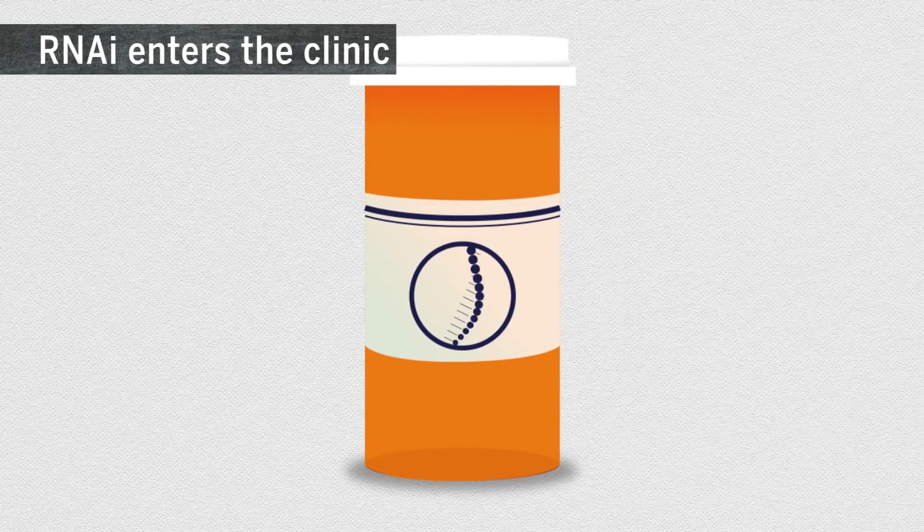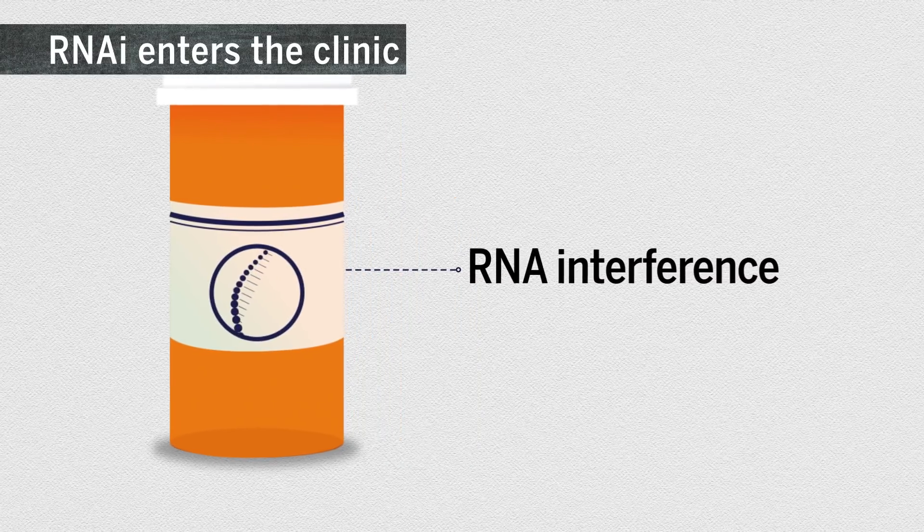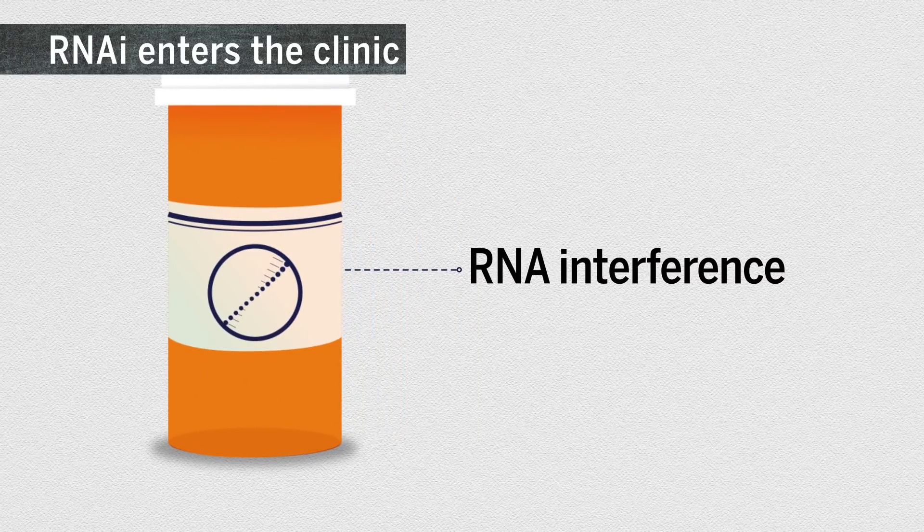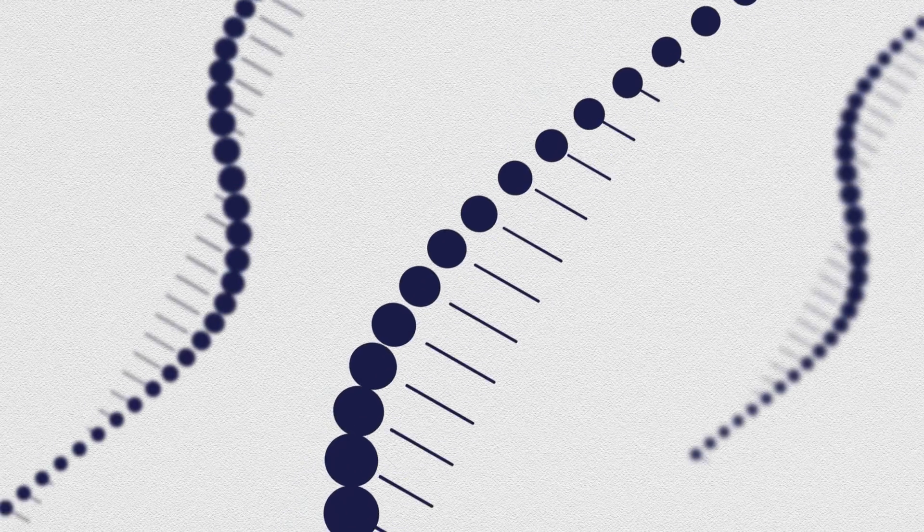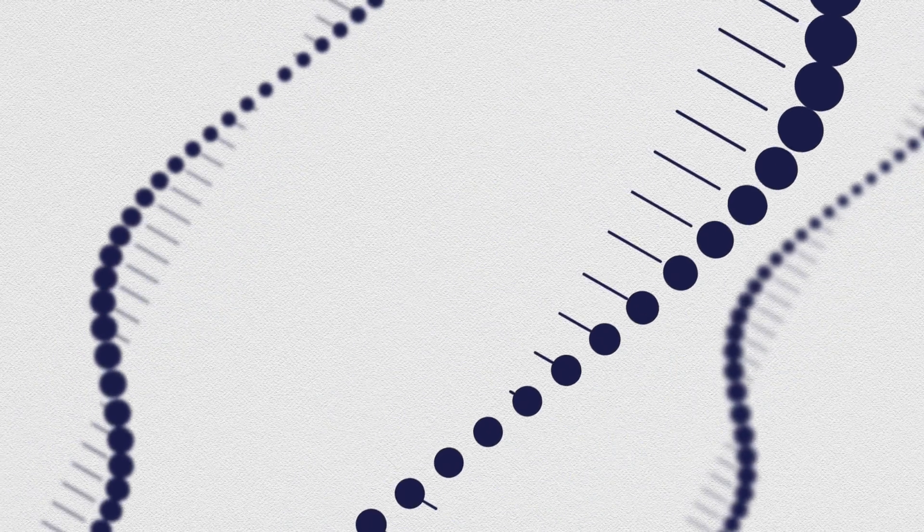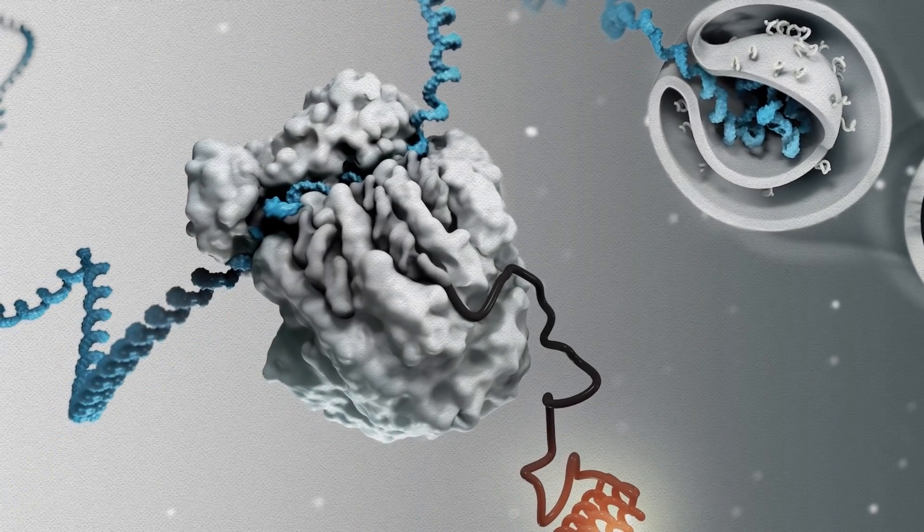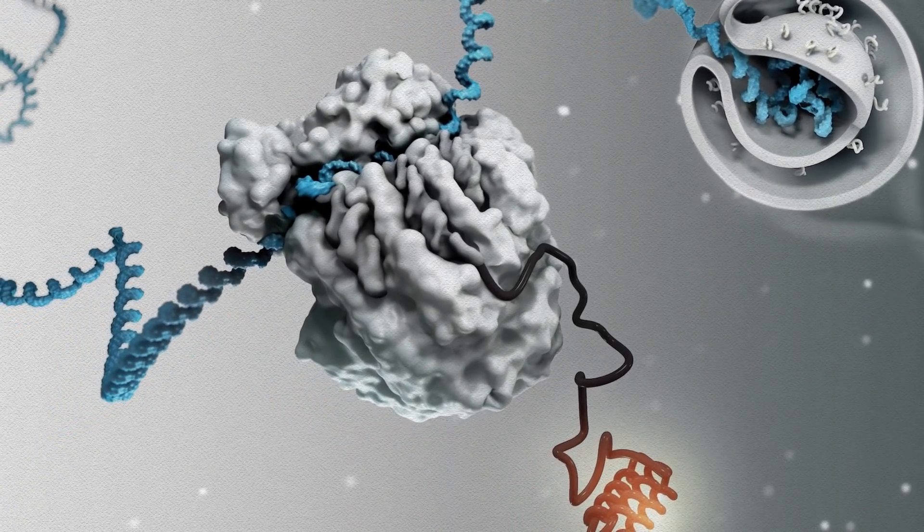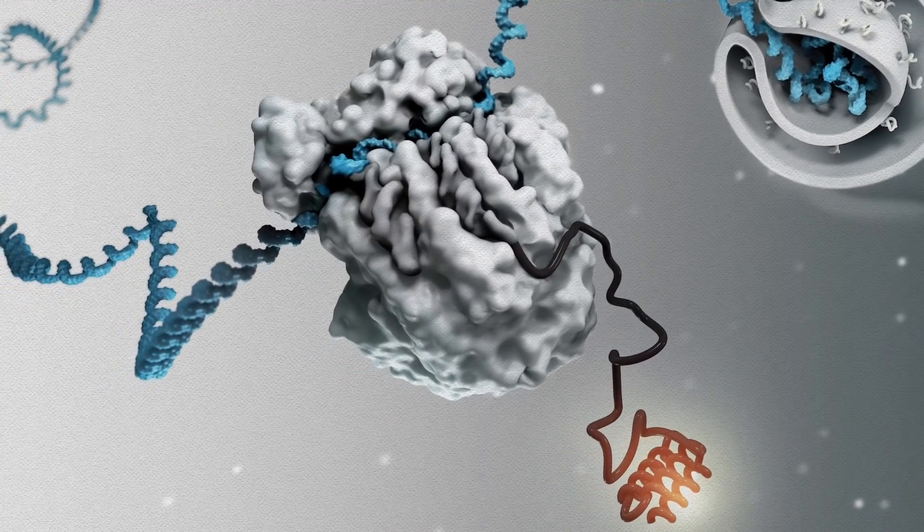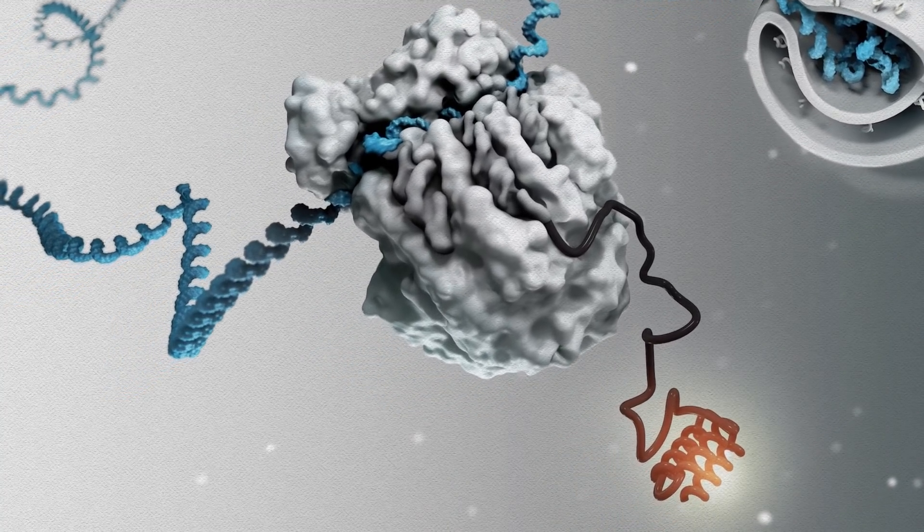The first drug based on a gene-silencing reaction called RNA interference, or RNAi, won approval this year for use in the United States and Europe. Researchers discovered RNAi, which blocks messenger RNA, 20 years ago. And the drug, which targets a rare hereditary disease, could be the first of many.